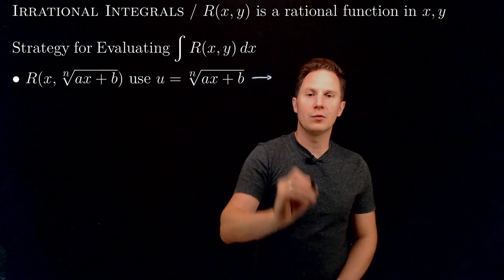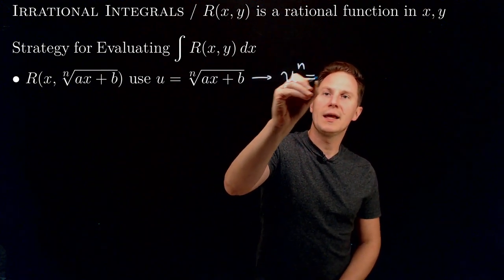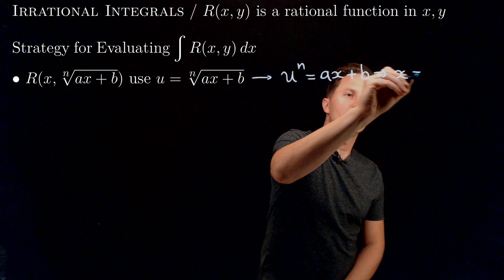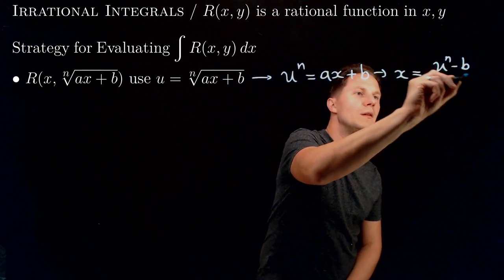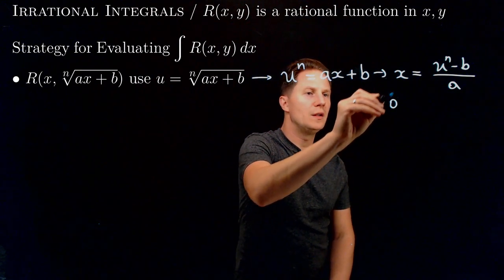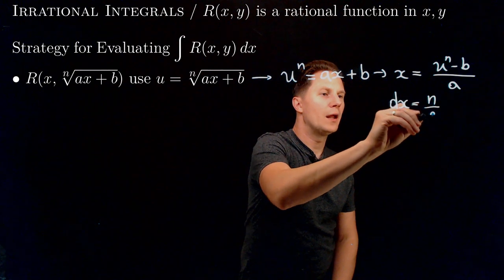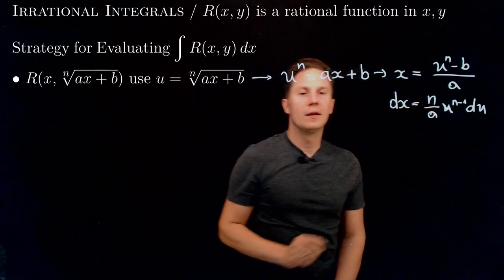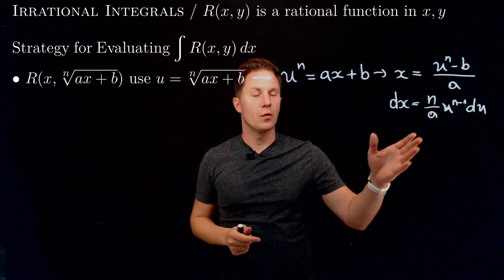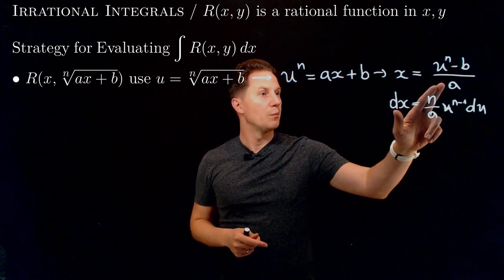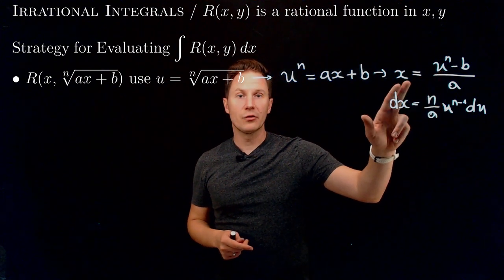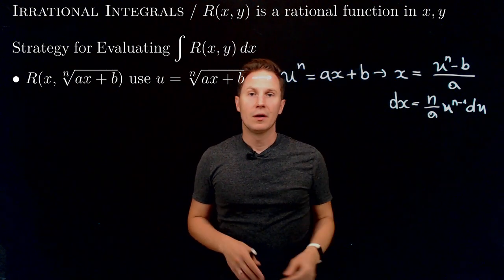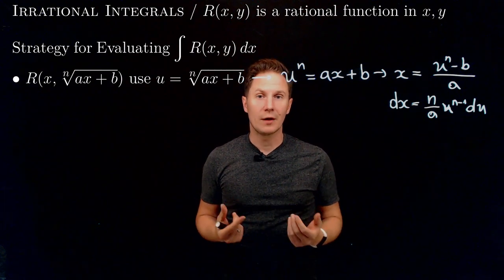With this substitution, u^n = ax + b, which means x = (u^n - b)/a, and therefore dx = (n/a)·u^(n−1) du. This shows that the irrational integral is transformed into an integral involving powers of u, making it a rational integral that we know how to deal with.